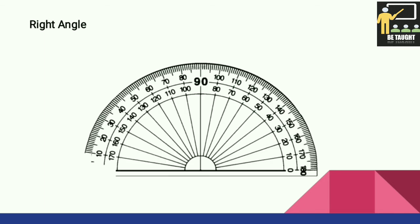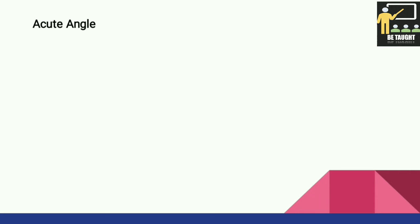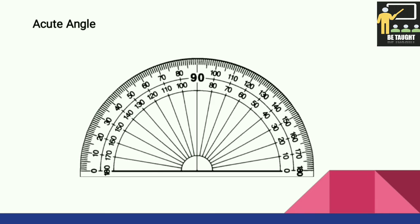Now we shall learn how to measure these angles on a protractor. For a right angle, we start from zero degrees and stop at 90 degrees — so this is a right angle. If you see the example on a clock, there also a 90 degree angle is formed.